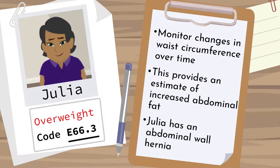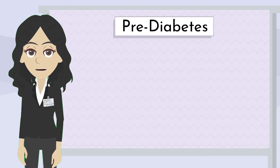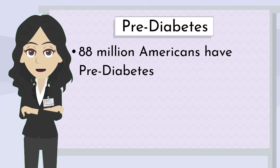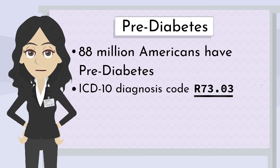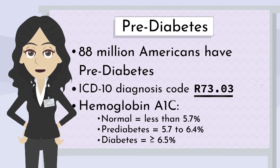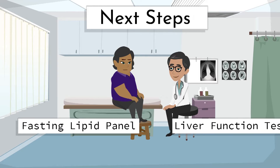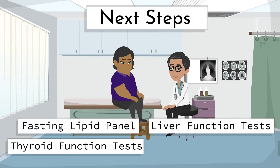Julia has an abdominal wall hernia on exam. BMI is a risk factor for developing abdominal wall hernias. Julia's life insurance blood work indicated that she has pre-diabetes, just like 88 million others in the United States. This is ICD-10 diagnosis code R73.03. The ranges for hemoglobin A1C are: normal less than 5.7%, pre-diabetes 5.7 to 6.4%, and diabetes greater than or equal to 6.5%. Additional tests for Julia should include a fasting lipid panel, liver function tests, thyroid function tests, and fasting glucose.